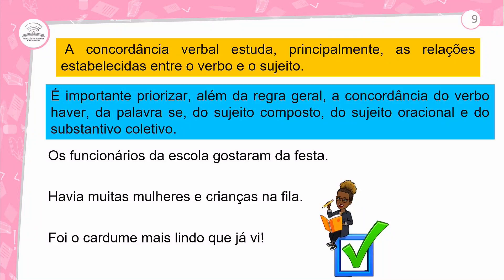Vamos à nossa árvore do conhecimento com a temática da aula: concordância verbal, parte 2. A concordância verbal estuda principalmente as relações estabelecidas entre o verbo e o sujeito. É importante priorizar, além da regra geral, a concordância do verbo 'haver', da partícula 'se', do sujeito composto, do sujeito oracional e do sujeito coletivo.